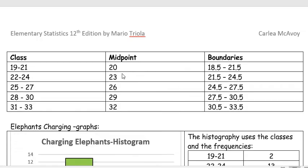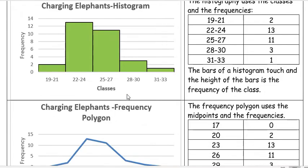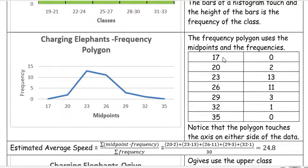I can go back up here and show you those were our midpoints. So why when I did this do I suddenly have 17 and 35? Well, notice that all of these are three apart because that's our class width. So I went down three and went up three on either end.